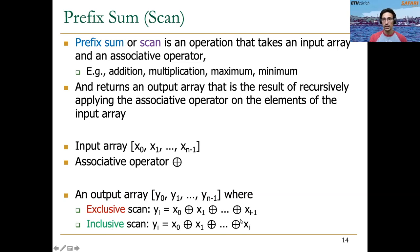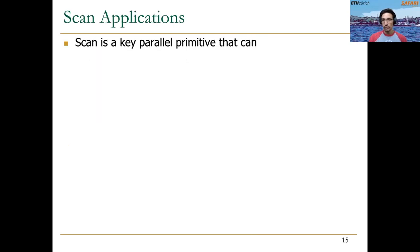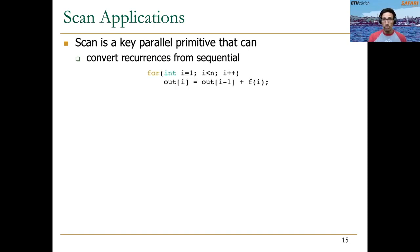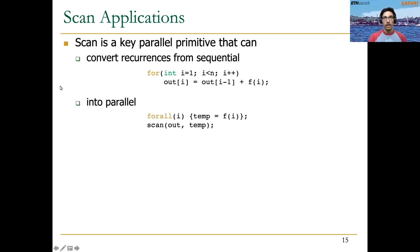In the case of exclusive scan, the sum goes up to element x(i-1). Scan is a key parallel primitive widely used in parallel and GPU computing that can convert sequential recurrences into parallel ones. This for loop, where every iteration depends on the previous, can be converted into a for-all loop where we perform the scan operation in parallel.